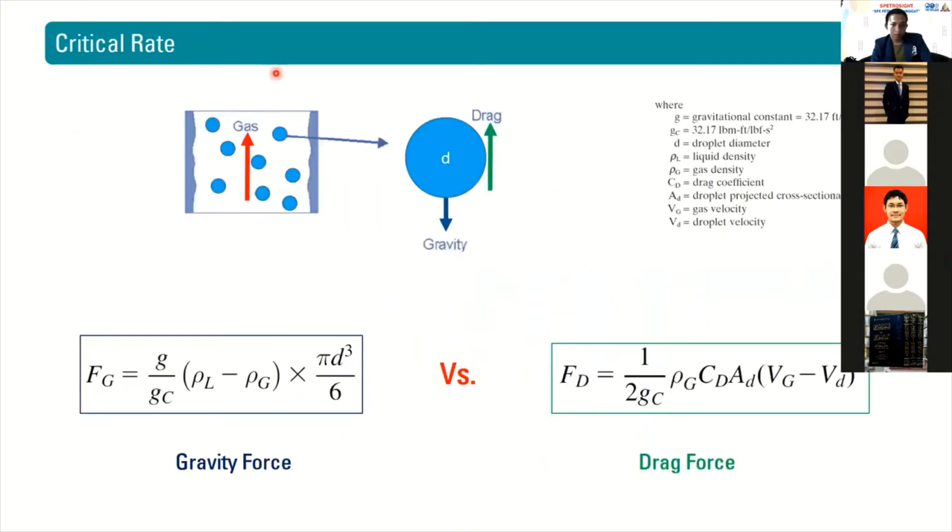We can calculate the critical rate by doing this balance. In this annular flow, we have gas at the center of the tubing, whereas there are droplets of liquid also in the center of the tubing. So the dominant phase is gas, and the minor part is liquid droplets.